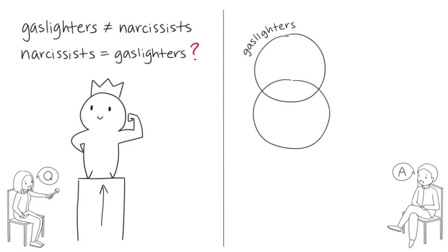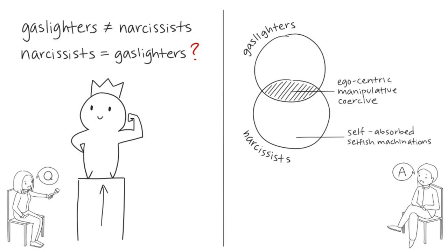Gaslighting and narcissism are different traits with certain overlaps. Both can be egocentric, manipulative, and coercive. Whereas narcissists tend to focus on self-absorbed, selfish machinations to use others, many gaslighters fixate on power or control to dominate others. Someone who has strong pathologies of both narcissism and gaslighting is toxic and dysfunctional at best, and highly dangerous at worst.